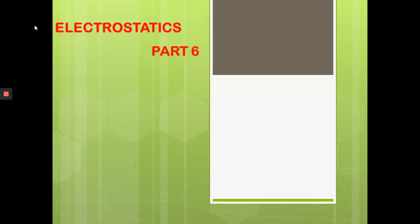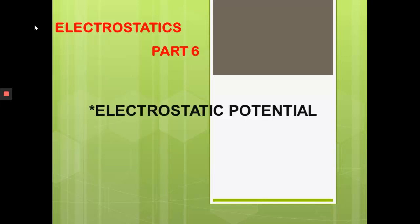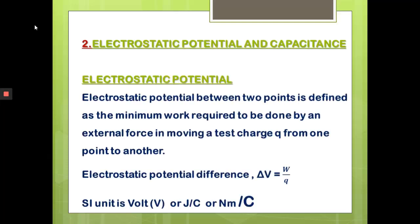Hello, dear students, welcome back to Learn Physics. In today's portion we are discussing the sixth part of electrostatics — the topic of electrostatic potential. Electrostatic potential difference between two points is defined as the minimum work required to be done by an external force in moving a test charge Q from one point to another.